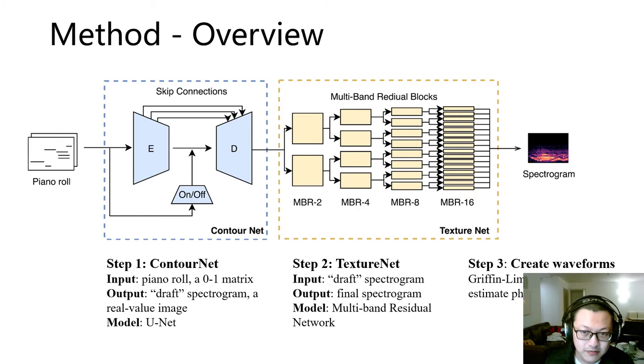The complete score to audio generation process is divided into three steps. In the first step, a piano-roll matrix is input to the ContourNet to get a draft of the spectrogram. In the second step, the draft is input to the TextureNet to add details such as overtones to generate the final spectrogram. And in the third step, the Griffin-Lim algorithm is used to estimate the phase of the spectrogram and restore the spectrum back into the waveform. In the next few pages, I will describe the model details.